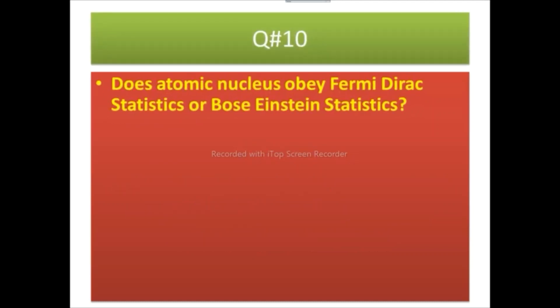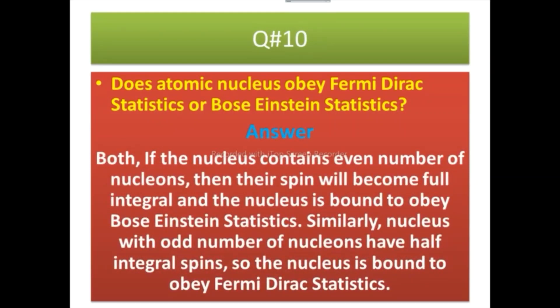Question number 10 is Does atomic nucleus obey Fermi-Dirac statistics or Bose-Einstein statistics? Answer is Both. If the nucleus contains even number of nucleons then their spin will become full integral and the nucleus is bound to obey Bose Einstein statistics.